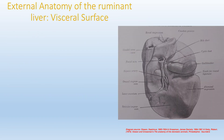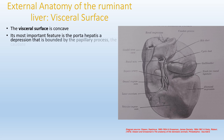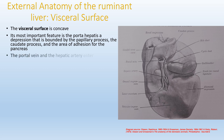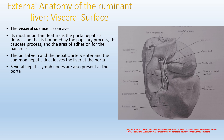Having looked at the diaphragmatic surface, we can now look at the visceral surface. The visceral surface is concave — it is the surface opposite the diaphragmatic surface. Its most important feature is the porta hepatis, which is a depression bounded by the papillary process, the caudate process, and the area of adhesion for the pancreas. The portal vein and hepatic artery enter, and the common hepatic duct leaves the liver at the porta hepatis. Several hepatic lymph nodes are also present at the porta hepatis.